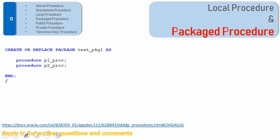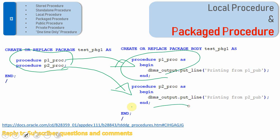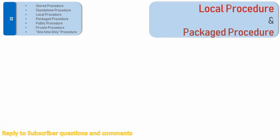Here is an example for a packaged procedure. I'm creating a package that consists of two procedures: p1_proc and p2_proc. The moment we declare the procedures in the spec, we need to define them in the body. So p1_proc is defined here and p2_proc is defined here. These procedures are called packaged procedures. Any procedure or function written within the package is called a packaged procedure or packaged function.